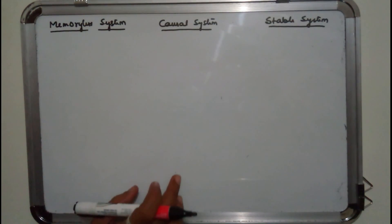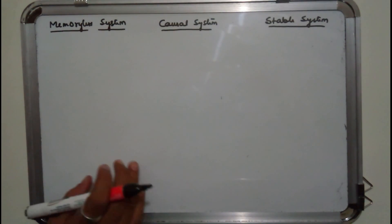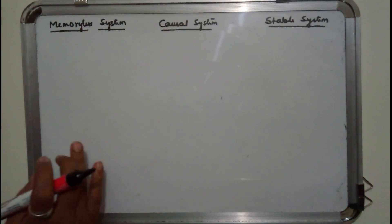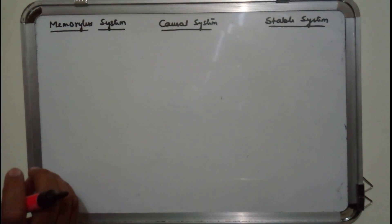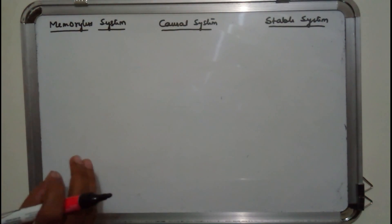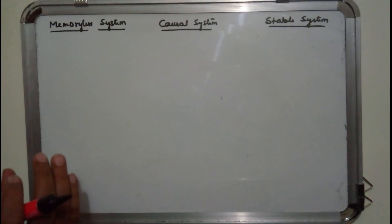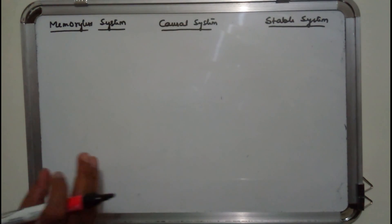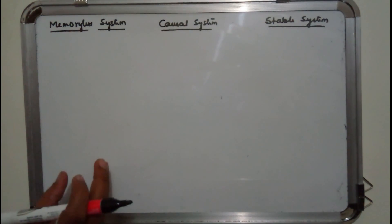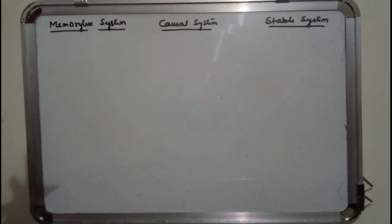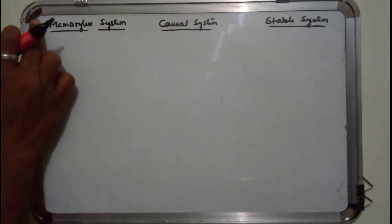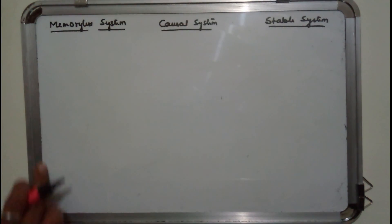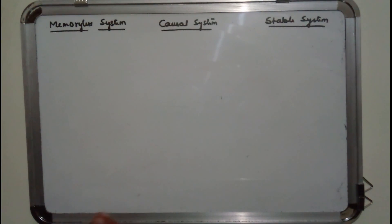In one of the topics previously covered, we categorized the system as having a memoryless system, causal system, stable system, linear system, and time-invariant system depending upon the input and output relationship. Now it is time to categorize the system depending upon the impulse response.